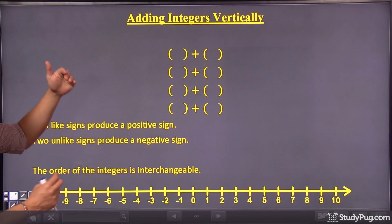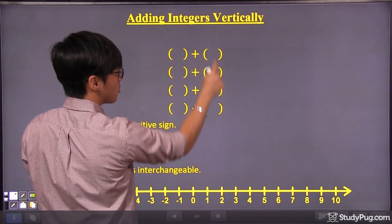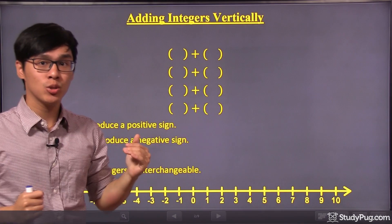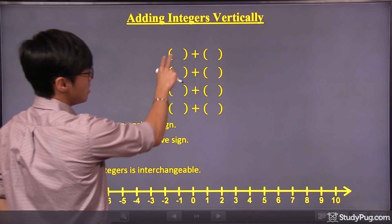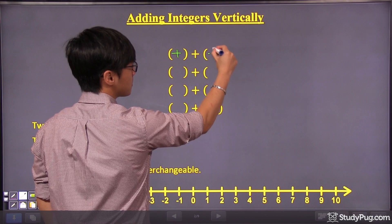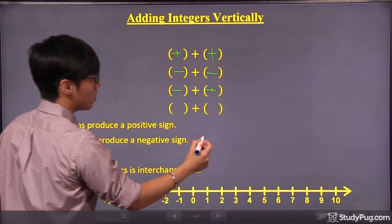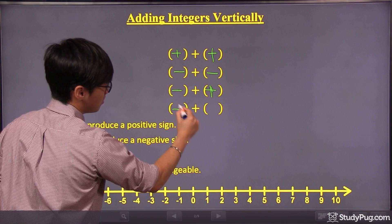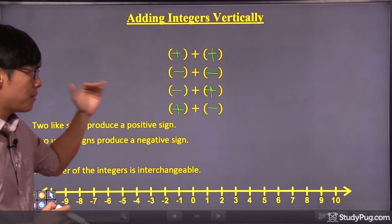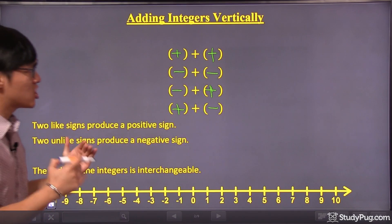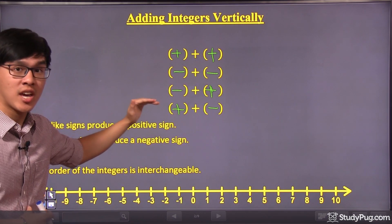Our topic is called adding integers vertically. Whenever we're adding two integers together, there are actually four cases we need to consider. The integers can be both positive, they can be both negative, they can be one negative and one positive, or one positive and one negative. There are these four cases to consider, and each case might be different from the others. I'm going to show you each case in a bit.